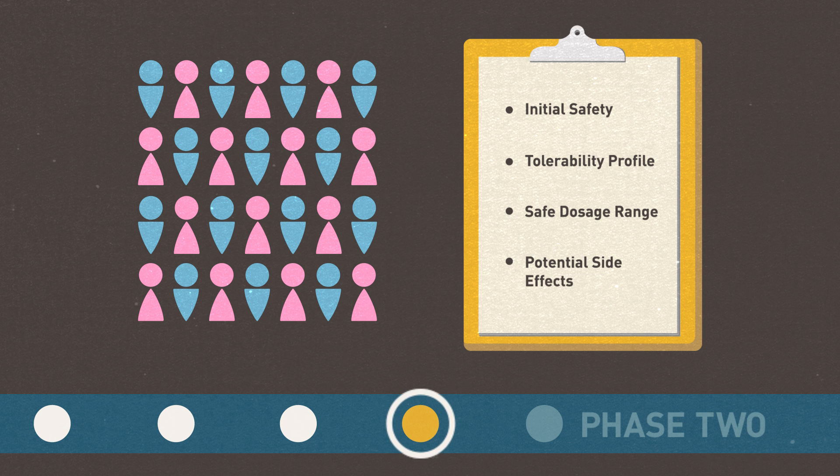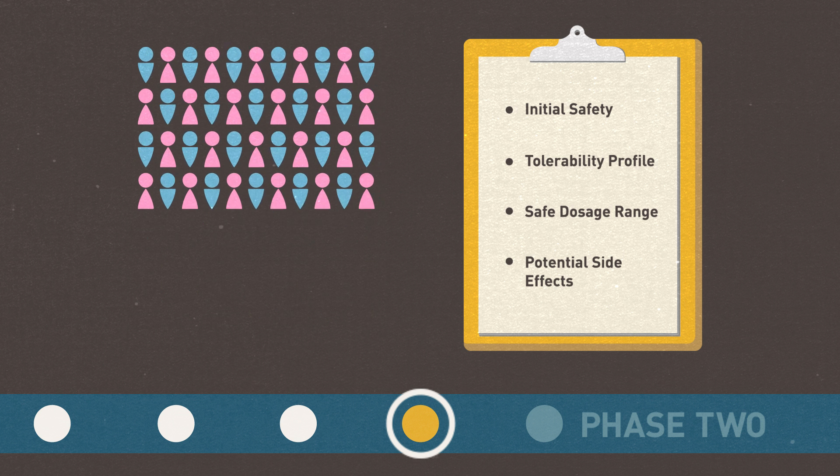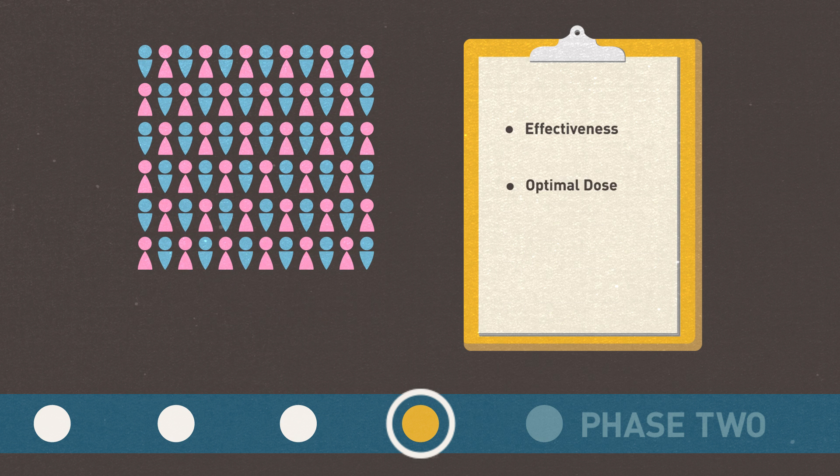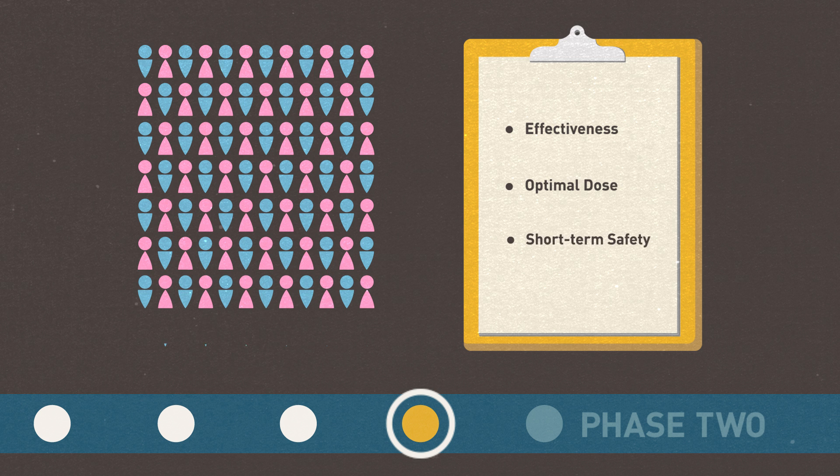In phase two, the drug is given to volunteer patients, usually between 100 and 500, to see if it's effective, identify an optimal dose, and further evaluate its short-term safety.